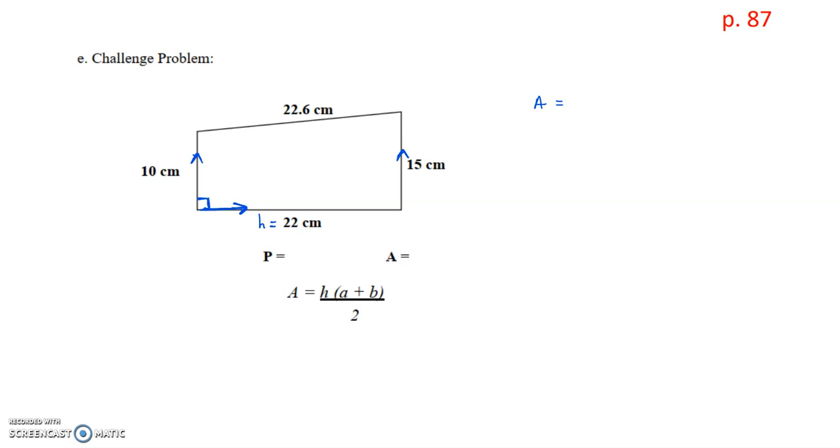Once we have that, we use our formula. So our height is 22 multiplied to the two bases added together, all divided by 2. So the area here is 22 times 25 divided by 2. And that works out to 275 square centimeters.